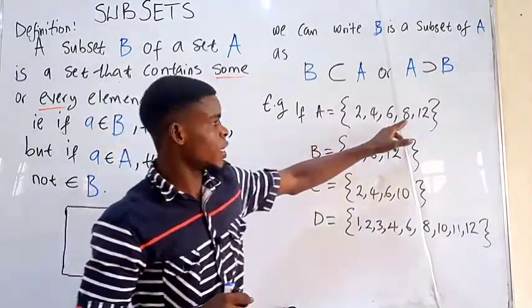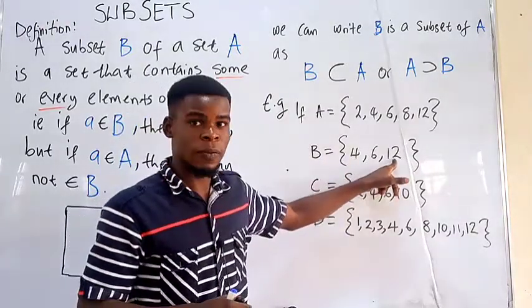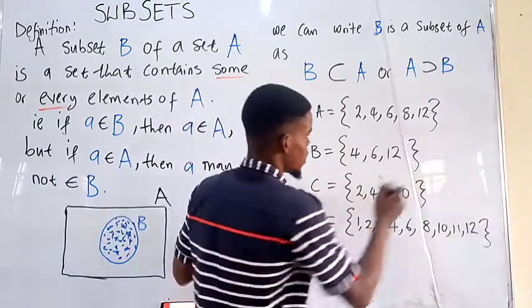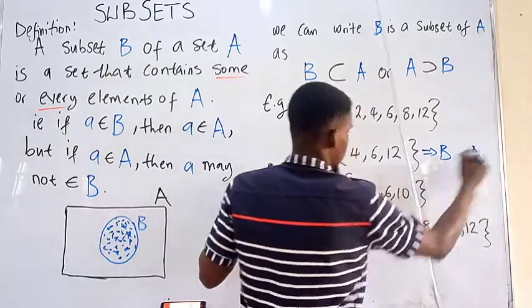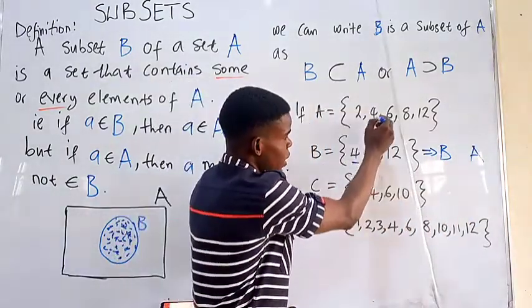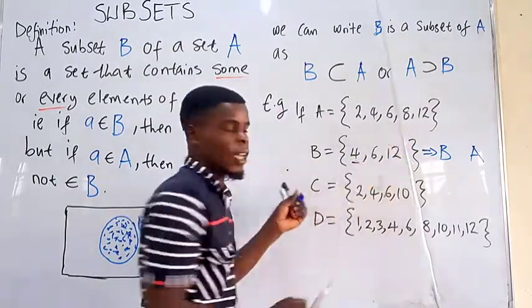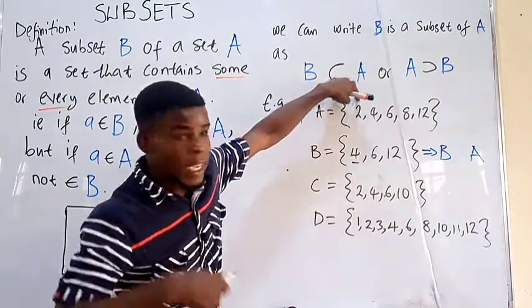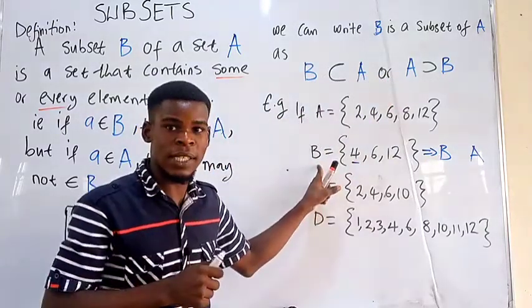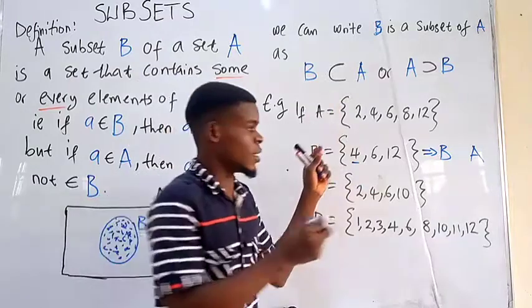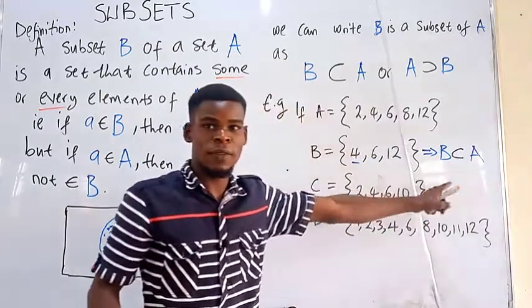So if A is 2, 4, 6, 8, 12, and B is 4, 6, 12, so this shows us that B relates with A. How? We have 4 here and 4 is in A, we have 6 and 6 is in A, we have 12 here and 12 is in A, but A contains other elements, like 2, it contains 8, of which B does not contain. That means that B is a subset of A, which implies that A is a superset of B.